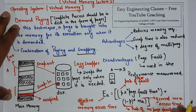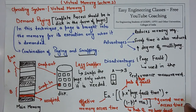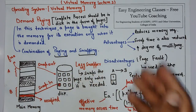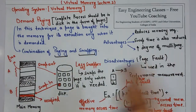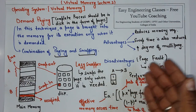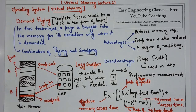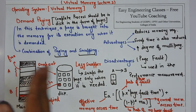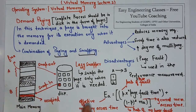In coming lectures we will see numericals based on this equation. This equation is very important as many numericals are asked in theory as well as GATE exams. So this was about demand paging — how it works, its combination of paging and swapping, how pages are swapped in and out on demand, the advantages, and the disadvantage of page fault occurrence. From the next video onwards we will see different types of page replacement algorithms. Thank you for watching — please subscribe to my YouTube channel for more such videos.